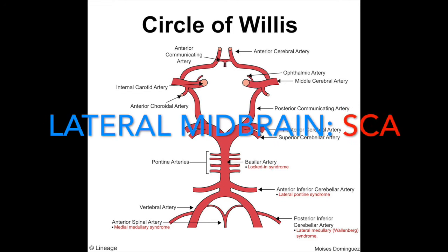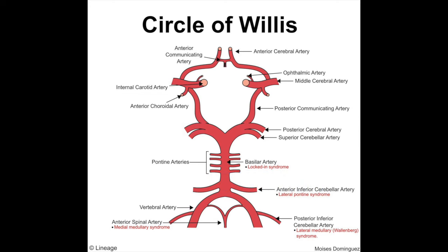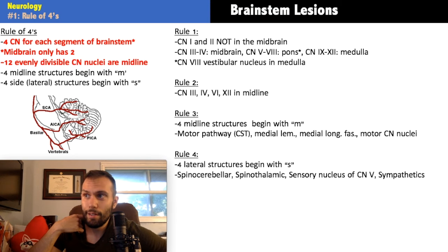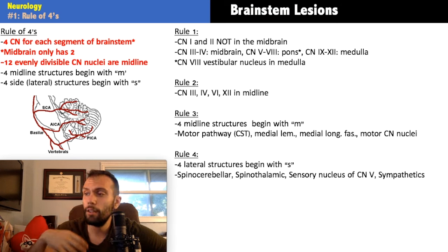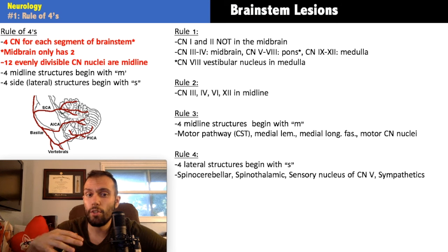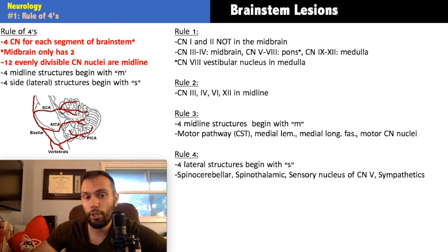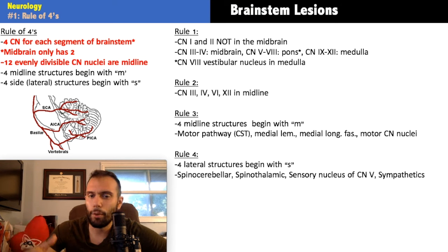One thing to note about the blood supply: there are a lot of different arteries that supply different regions of the brainstem. In the midbrain there are also components from the posterior cerebral artery and other vessels, so this is not a hard and fast rule. These are just the arteries they usually ask about, because this is such a complex region that you could make an entire exam on it alone.